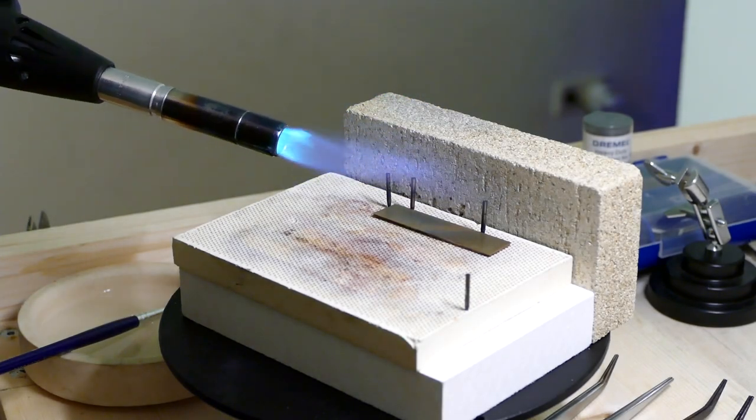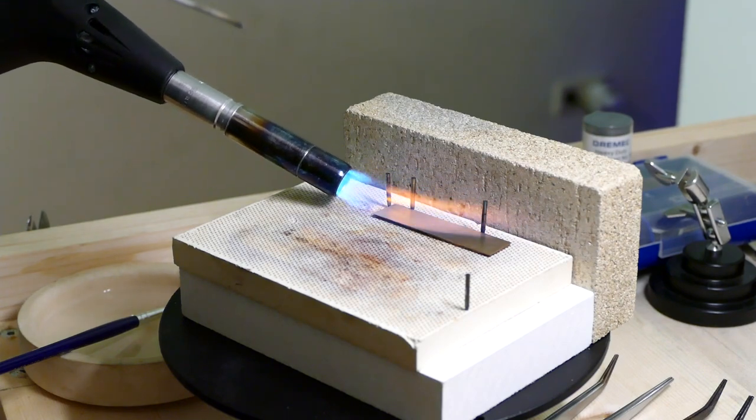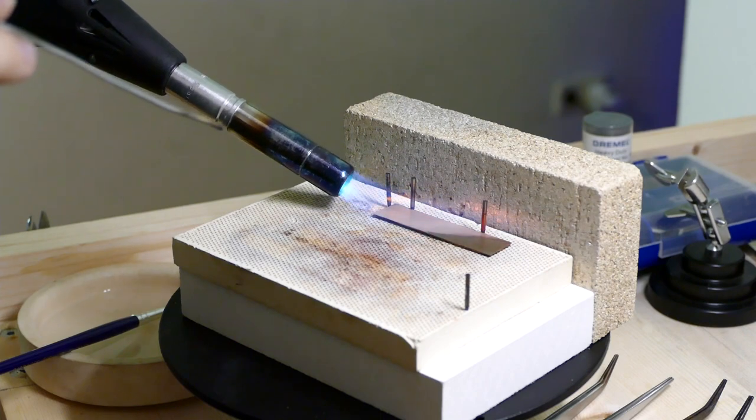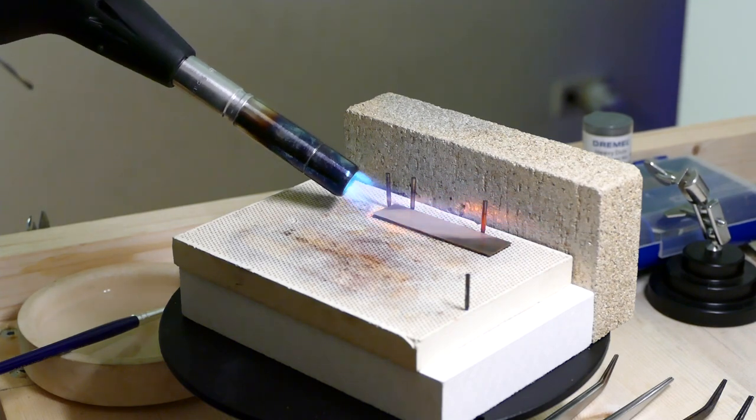So in this step, my plan was to solder both the bronze and the silver sheet together so I would have one single sheet of metal to work with.